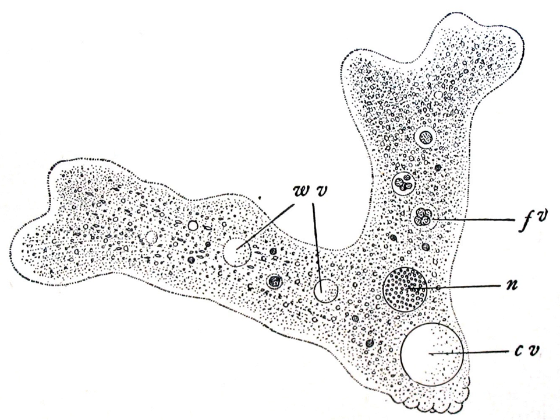Amoeba proteus, alternatively chaos diffluens, is an amoeba closely related to the giant amoeba and a species commonly bought at science supply stores.